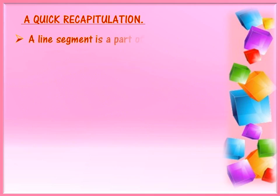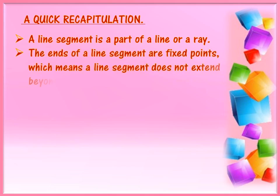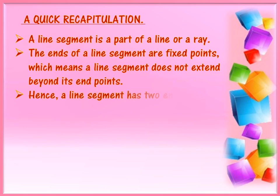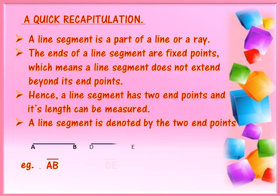A line segment is a part of a line or a ray. The ends of a line segment are fixed points, which means a line segment does not extend beyond its end points. Hence, a line segment has two end points and its length can be measured. A line segment is denoted by its two end points — for example, line segment AB, line segment DE, or line segment HG.